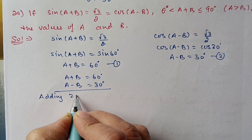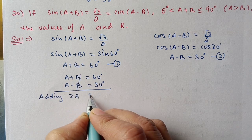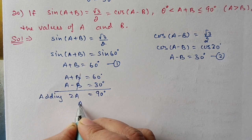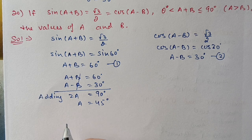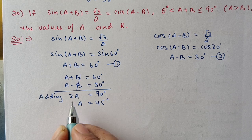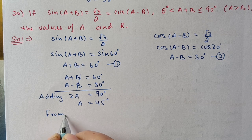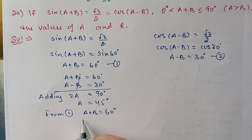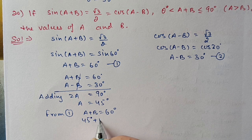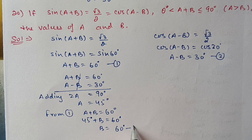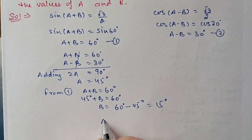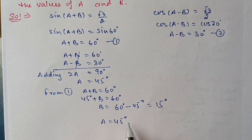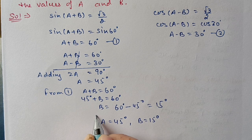Substituting a equals 45 into the first equation: 45 plus b equals 60 degrees, so b equals 60 minus 45, which is 15 degrees. Therefore, a equals 45 degrees and b equals 15 degrees.